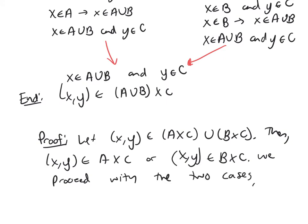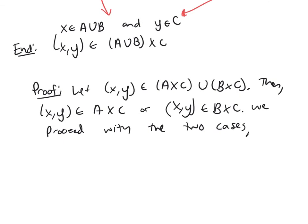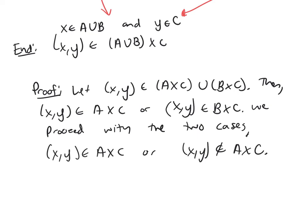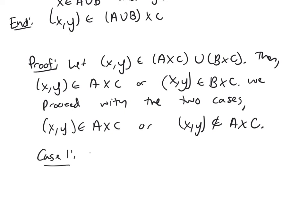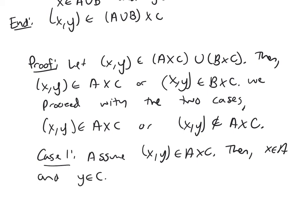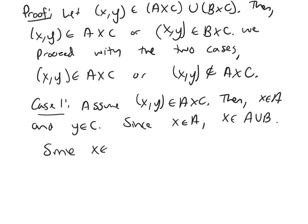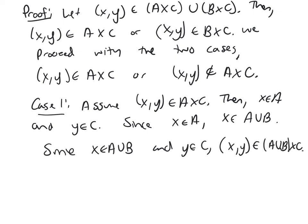Those two cases are: (x, y) is in A cross C, or (x, y) is not in A cross C. Case 1: assume (x, y) is in A cross C, then x is in A and y is in C. Since x is in A, x is in A union B. Since x is in A union B and y is in C, (x, y) will be in A union B cross C. That's the end of Case 1.